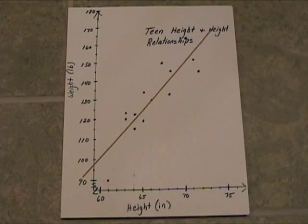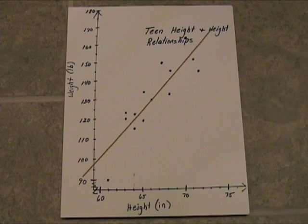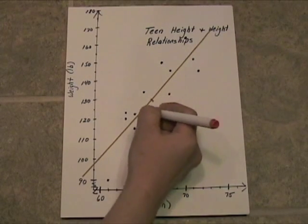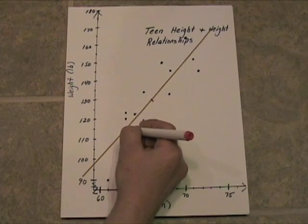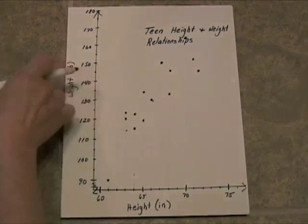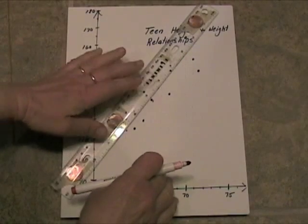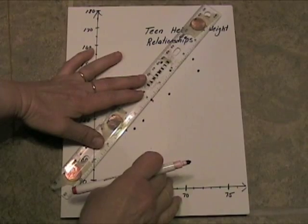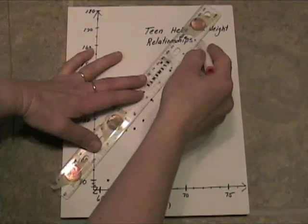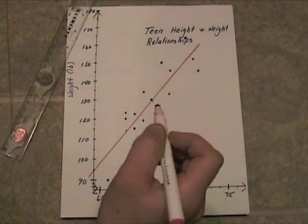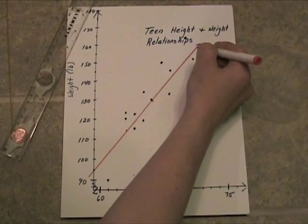Once you have your spaghetti string where you want it, go ahead and take your pencil and mark two spots on your spaghetti string, and then remove the string, take your ruler, and connect those two spots. So this is what I think my line of best fit's going to be.